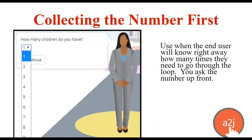We'll talk about collecting the number first. You use this way when the end user is going to know right away how many times to go through the loop, and you just ask them for the number. Most commonly — and in the example and exercise I have for you later — it's generally used with children. An end user knows how many children they have. It's a finite loop; you can set the parameters of how many you're going to collect. In the sample, it's one through nine, but you as the author create the scope of your interview. You ask the number up front from the end user, and it's stored in a number variable — in this example, it's called "number of children and you."